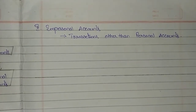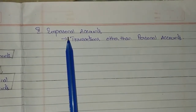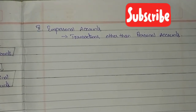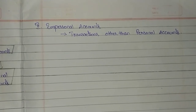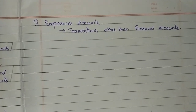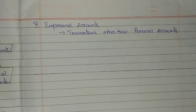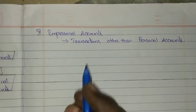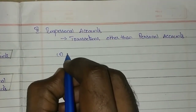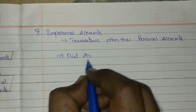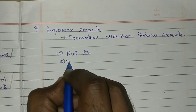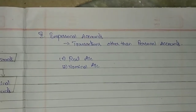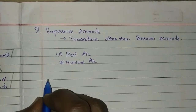The second category of accounts is impersonal accounts — transactions other than personal accounts. Apart from personal accounts, whatever other transactions we are having will come under the impersonal account. Impersonal accounts are again classified into two categories: real accounts and nominal accounts.